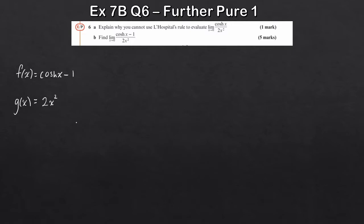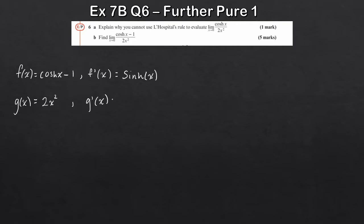Remember: don't use the quotient rule — differentiate f(x) and g(x) separately. So f′(x) = sinh(x), and g′(x) = 4x. Now consider whether this is still indeterminate: f′(0) = sinh(0) = 0 and g′(0) = 4(0) = 0, giving zero over zero again. So we apply L'Hôpital's rule a second time.